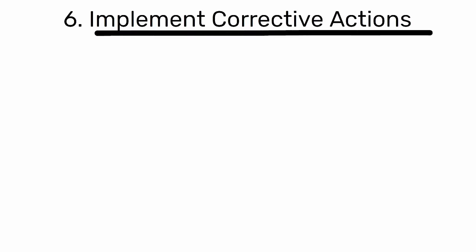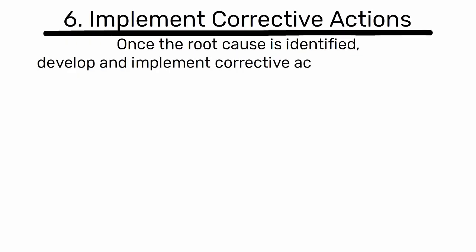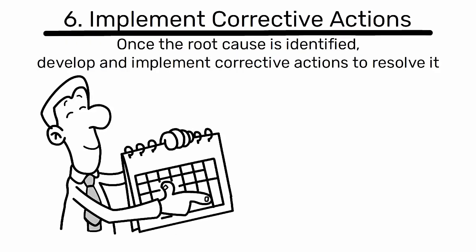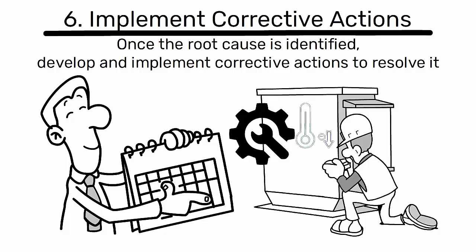Step 6: Implement corrective actions. Once the root cause is identified, develop and implement corrective actions to resolve it. In this case, it could be scheduling regular maintenance for the cooling system.